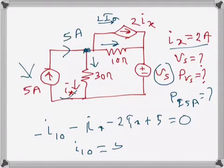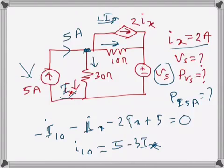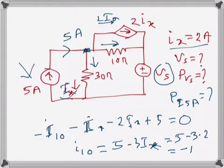From KCL, I10 = 5 - 3Ix. Since Ix is 2, that becomes 5 - 6 = -1 amp. The negative sign means I10 is actually entering the node, so we reverse the direction. The current is 1 amp entering in that direction.